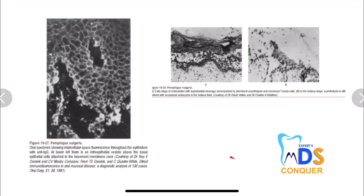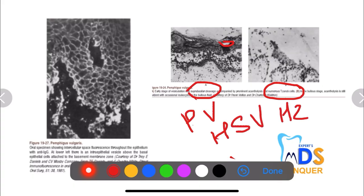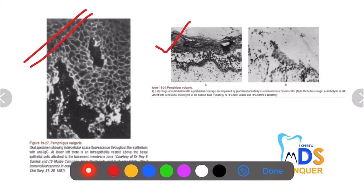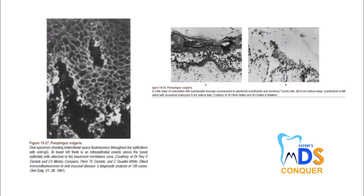Next, pemphigus vulgaris — you can see suprabasilar cleavage and numerous Tzanck cells. Tzanck cells are not only seen in pemphigus vulgaris but also in herpes simplex and herpes zoster. In the early stage there is suprabasilar split with numerous Tzanck cells and acantholysis. In the bullae stage there are occasional leukocytes in the bullae fluid. Immunofluorescence gives a fishnet appearance with pemphigus vulgaris.